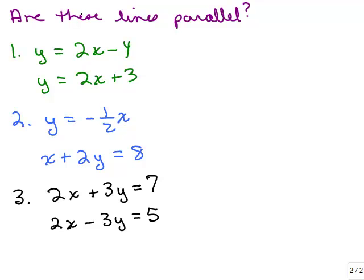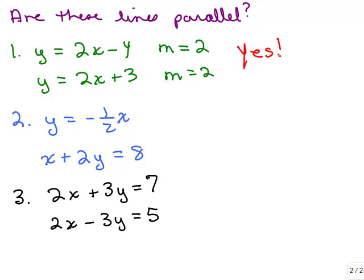So let's determine if each set of two lines are parallel or not without actually graphing them. All we have to do is find out if they have the same slope or not. So for number one, the first line, y equals 2x minus 4, has a slope of 2. And for the second equation, y equals 2x plus 3, that also has a slope of 2. So yes, those two lines must be parallel.